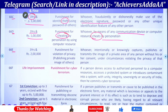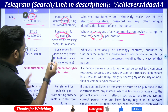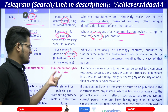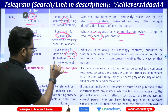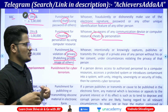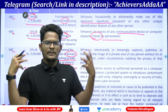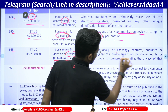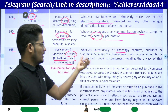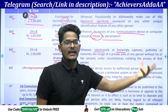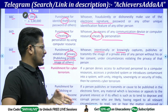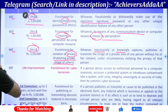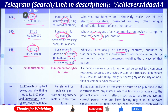Section 66E — punishment for violation of privacy of other person. Publishing private image of other person in social media or somewhere — when you intentionally, knowingly capture or publish or transmit an image of a private area of any person without his or her consent, under those circumstances three years imprisonment and two lakh will be the penalty imposed.